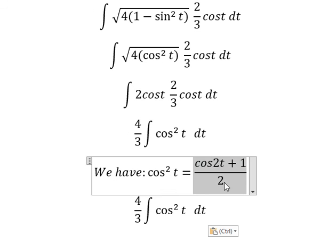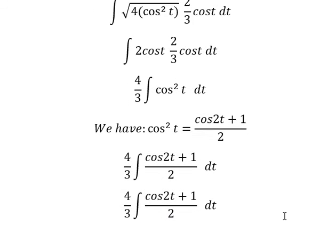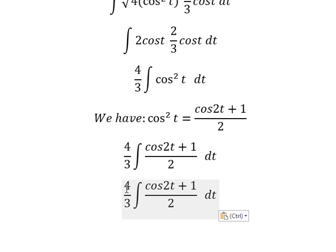So we put this one, and number 2 we put outside, and you get 4 over 3 multiplied by 1 over 2, you get 2 over 3.